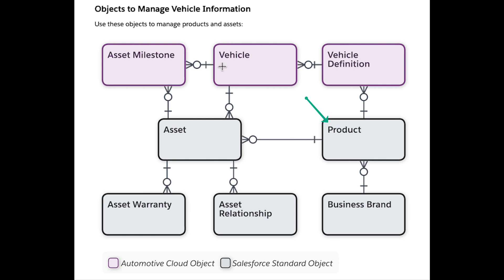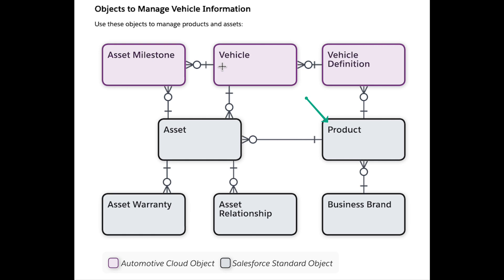The product stores attributes like description, make, model, year, and so on. In order to organize and classify the products, you have access to constructs like catalogs, product categories, bundles, and so on, which typically act as guardrails for the sellers when they are configuring the products and putting the options together on a vehicle, for example.